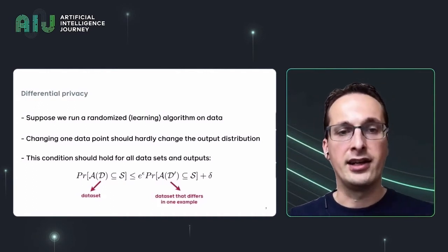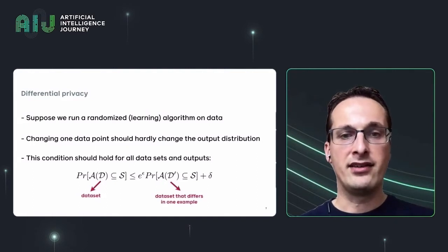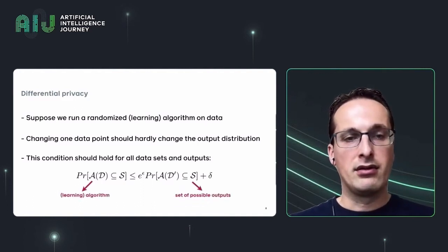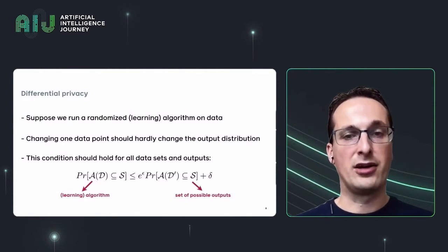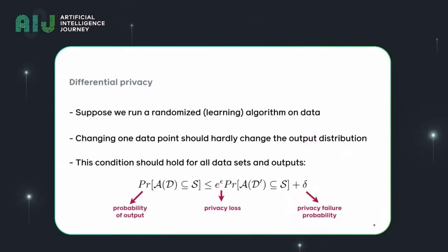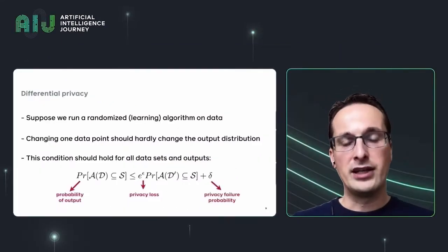In practice, that condition looks like this. On the left-hand side is a dataset D, and on the right-hand side is a dataset D prime that differs from D in only one example. The symbol A indicates the learning algorithm and S is the set of possible outputs — the set of possible hypotheses. Basically what this is saying is that the probability of a particular output when you run algorithm A on dataset D should be almost the same as the probability of a particular output on the dataset that differs in only one example, where 'close' is defined in terms of the privacy loss — this e to the power epsilon multiplicative term — and a privacy failure probability delta, which is an additive term.